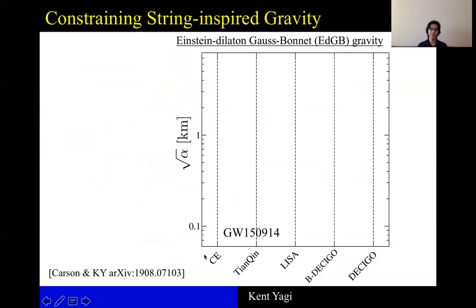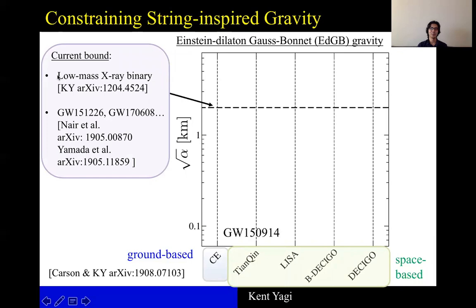And here, I consider Cosmic Explorer and also various space-based detectors, including LISA. The current bound in this theory comes from, for example, low-mass X-ray binary observations, or stacking multiple binary pulsar events, and the square root of alpha is given by two kilometers at most.